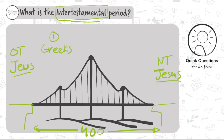The second part is run by a group of Jews called the Maccabees. The Maccabees were a group of Jewish men who did not like the Greeks disrespecting them, so they fought against them, and for many years they ruled in Israel.